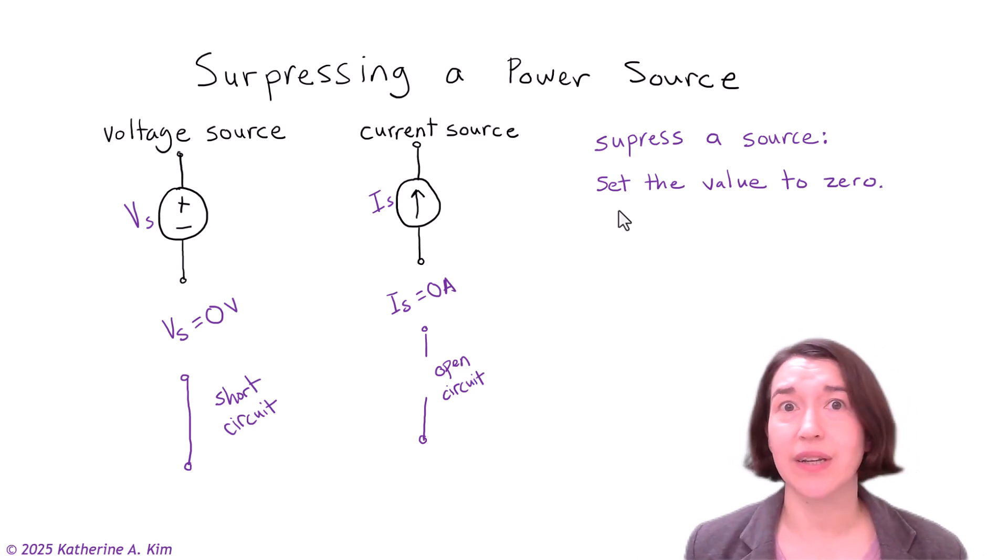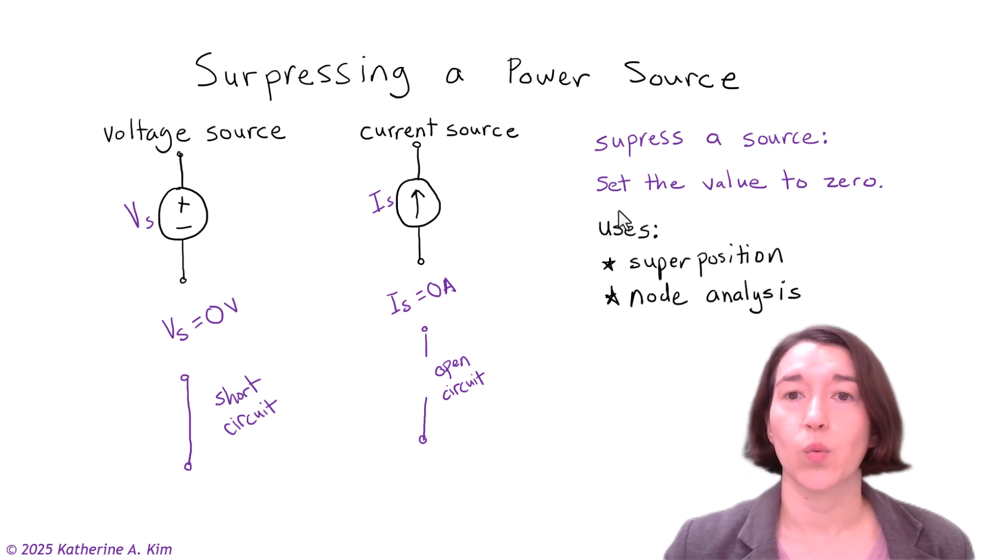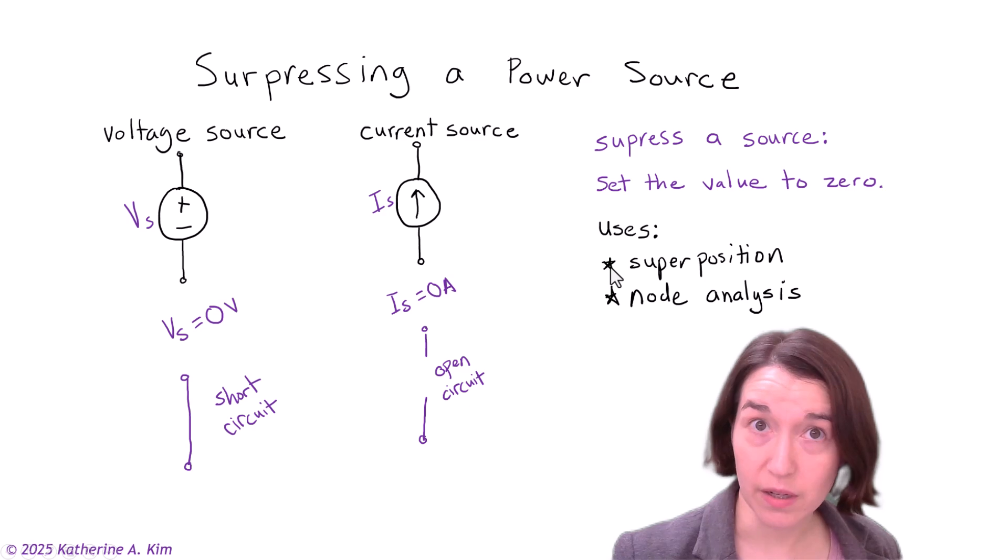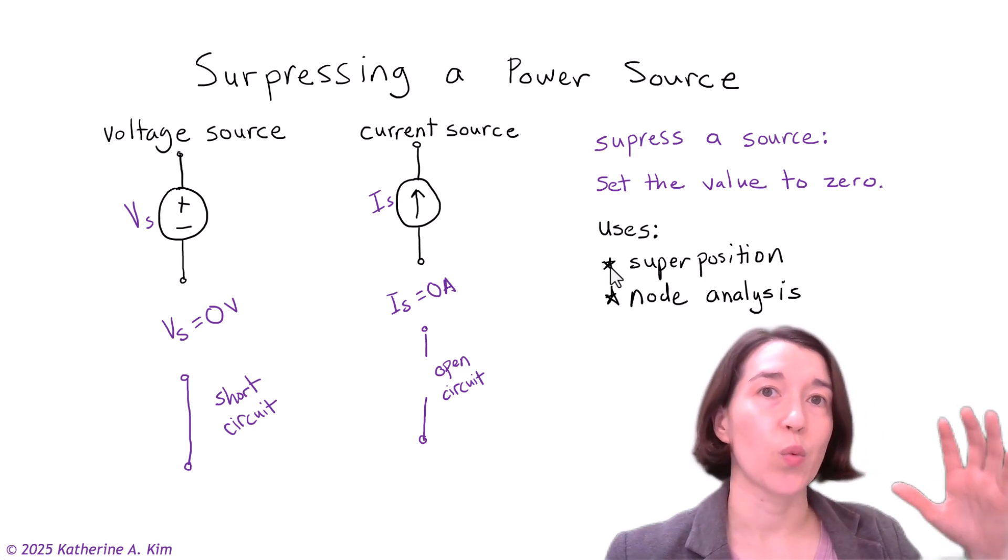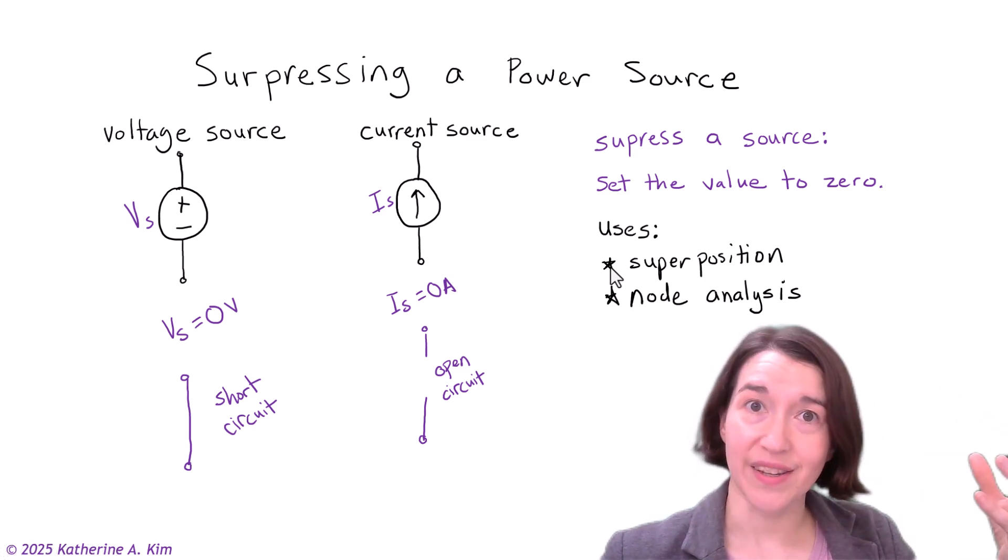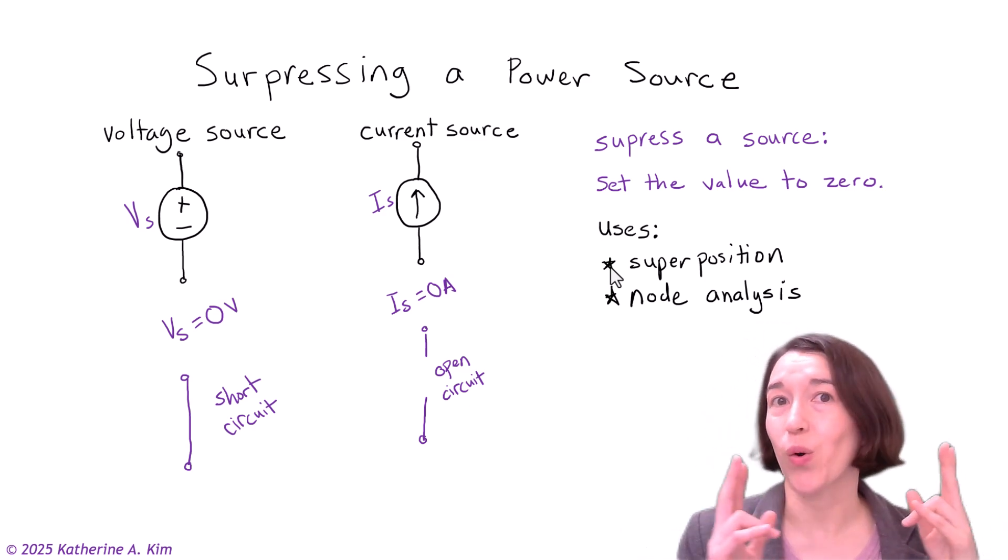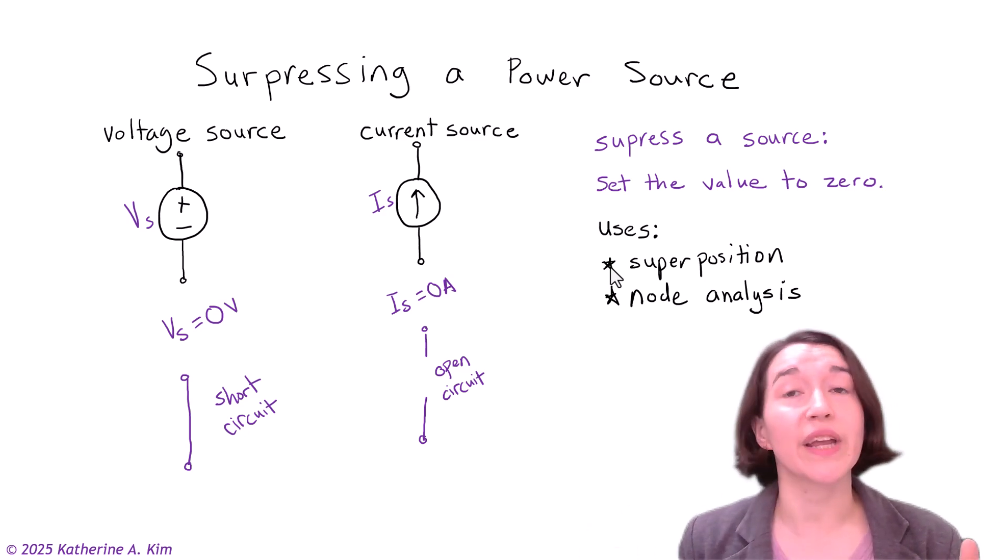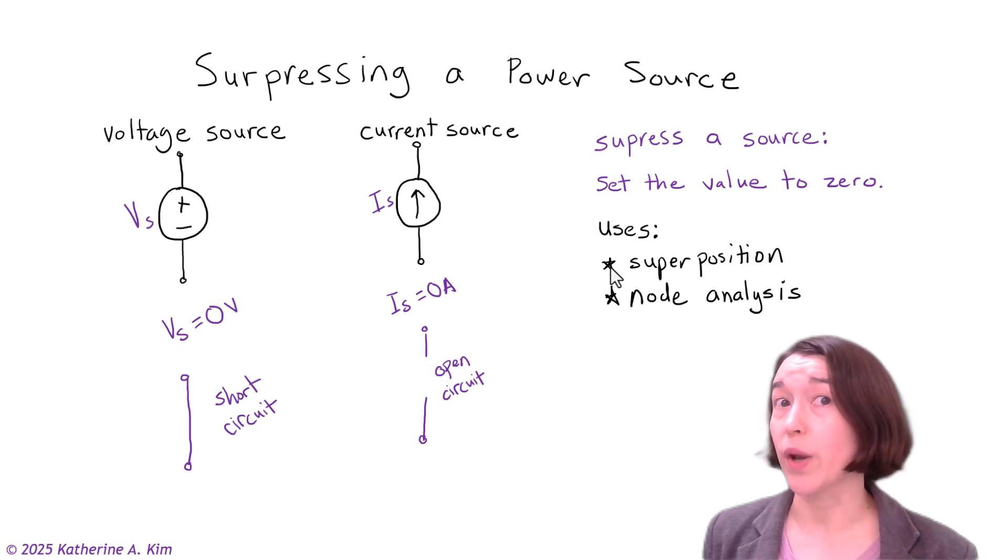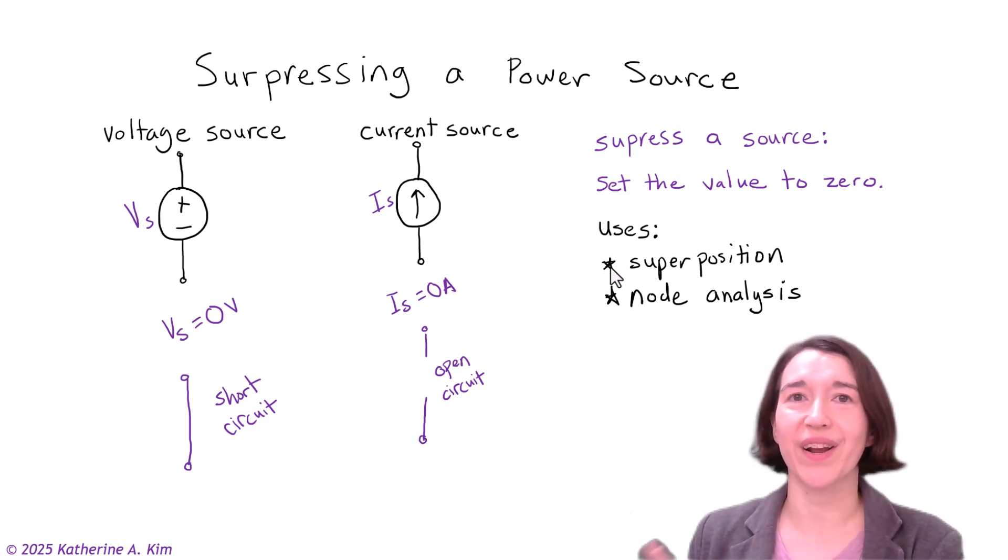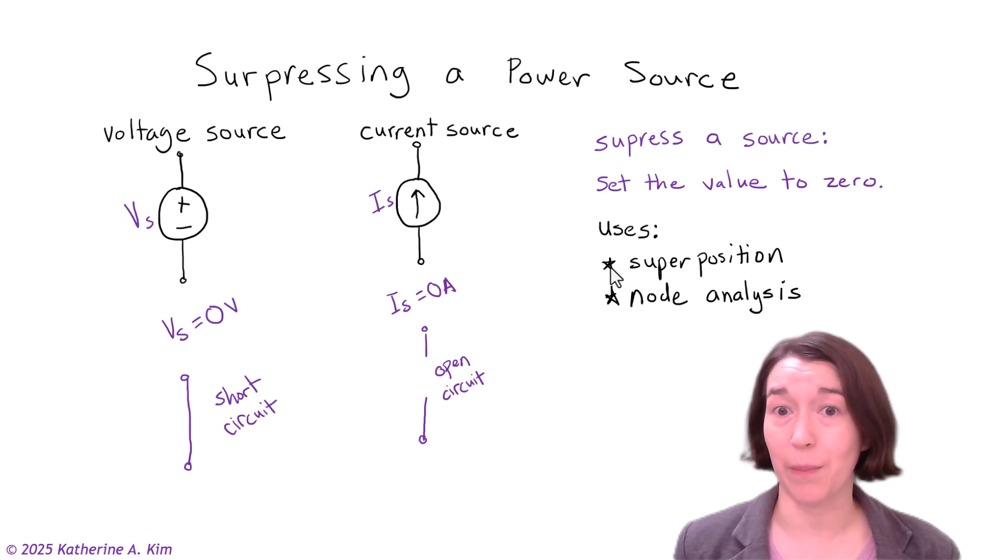When would we use this? Well, we can use it when we're doing superposition, because in superposition we are suppressing each of the sources, or you're turning only one source at a time on and suppressing the other ones, which is making their value zero. So you're only having one input at a time, and then doing circuit analysis and rotating through all the sources, adding them all up. So that's one time we use source suppression.